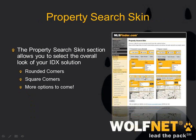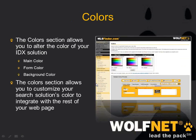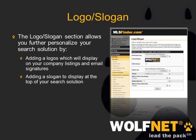The property search skin — we just added another skin this week. If you have the normal look of IDX, you can choose between the rounded corners, square corners, and the new modern skin, which is really clean looking. The color section allows you to alter the color of your IDX, including the main color, the form color, and the background color. You can choose colors that are already used in your website so it looks more integrated with it.